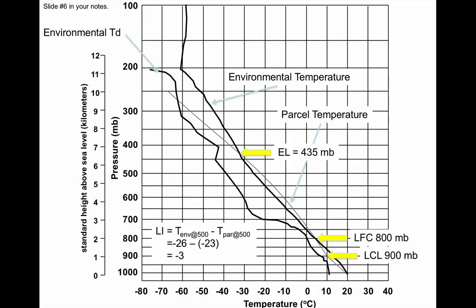Here's a quick and dirty way to assess atmospheric stability — we do a check at 500 millibars. Just like we use indices for the stock market, such as the Dow Jones or S&P 500, we use a similar index in weather. At 500 millibars, compare the temperature of the environment to the temperature of the parcel by subtracting. For example: environmental temperature is minus 26 degrees Celsius, parcel temperature is minus 23 degrees Celsius. Negative 26 minus negative 23 equals negative 3. If the lifted index is negative, the environment is supportive of severe thunderstorms.